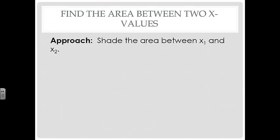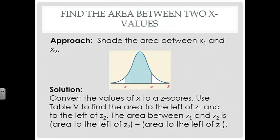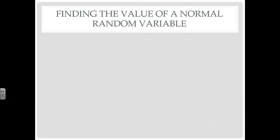To find the area between two X values, shade the region between them. Since table values give area to the left of each Z-score, take the area corresponding to the larger Z-score and subtract the area corresponding to the smaller Z-score — that is, take the right-hand Z-score area and subtract the left-hand Z-score area.